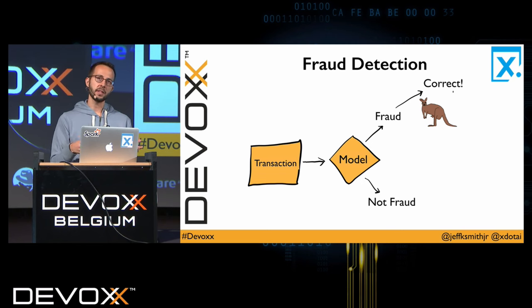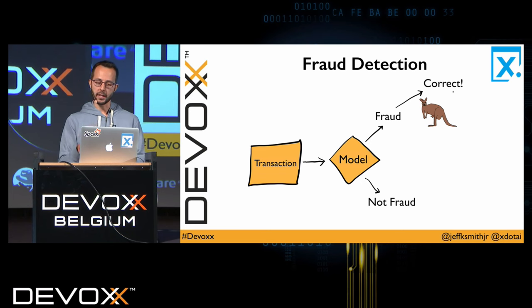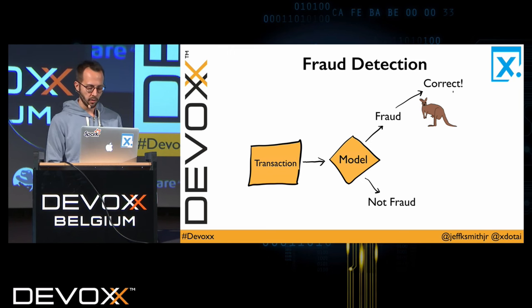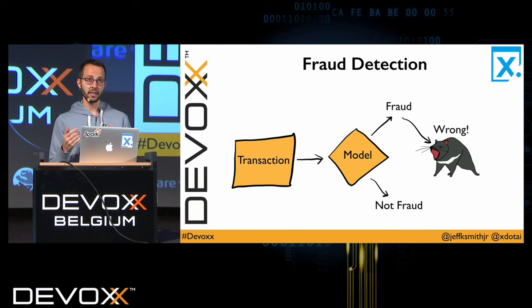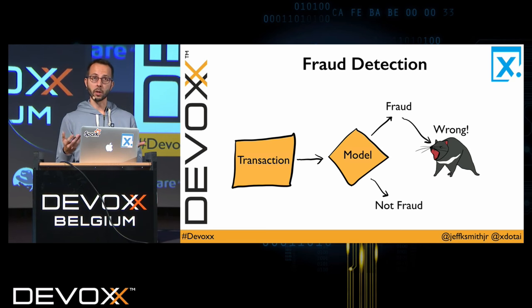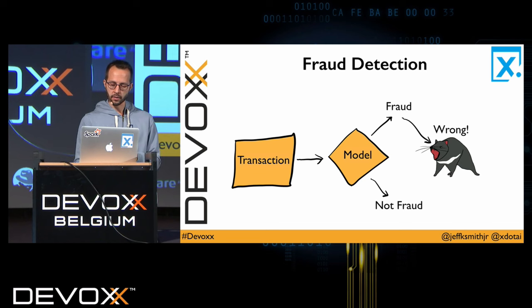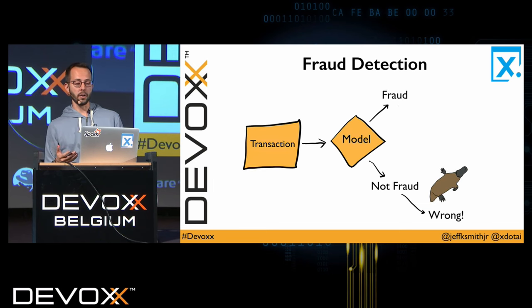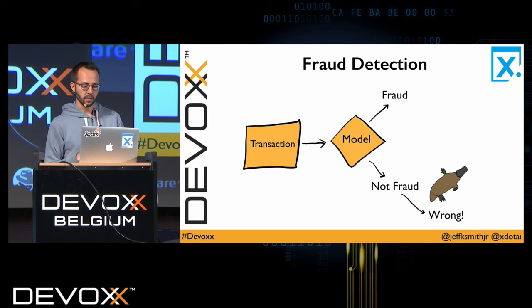In the diagram shown, if we've predicted fraud and we're correct, everything is fine — our model has served its purpose. If we detected fraud and we're incorrect, we've angered our customers and will lose money as we drop them. Or if we fail to detect fraud, we're going to lose money as well because we're allowing illegitimate transactions to pass through our system and incur further costs.